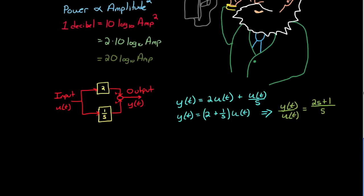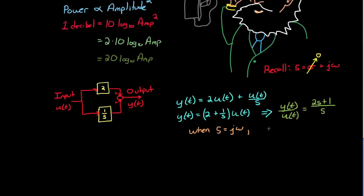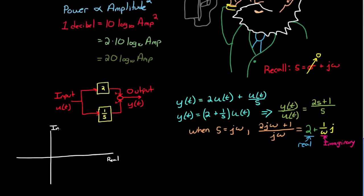Recall that the Laplace transform variable s is a complex variable, σ + jω. However, when we're talking about frequency response of a system, we are talking about the steady-state response — that is, once all the transients have died out, or when the exponential term sigma is zero. So for steady-state behavior, s just becomes jω. Steady-state phase and gain can be calculated directly from a transfer function by setting s to jω. That makes the transfer function become 2 + 1/(jω), where 2 is the real component and 1/ω is the imaginary component. If we plot these real and imaginary components on a real and imaginary axis, we can calculate gain and phase geometrically from this plot.